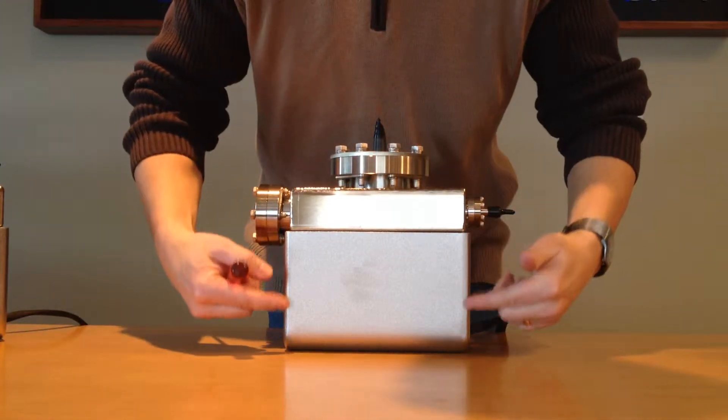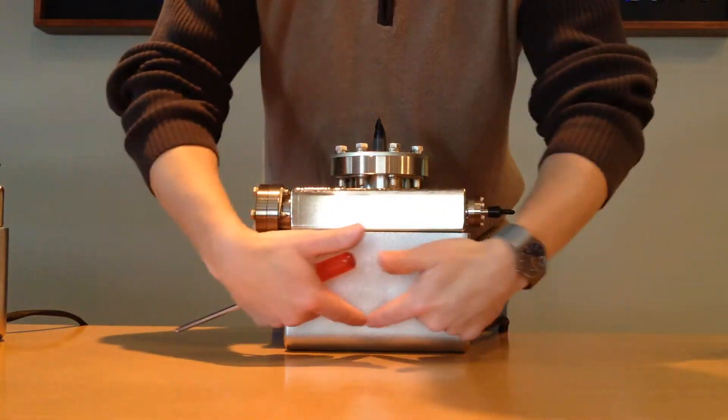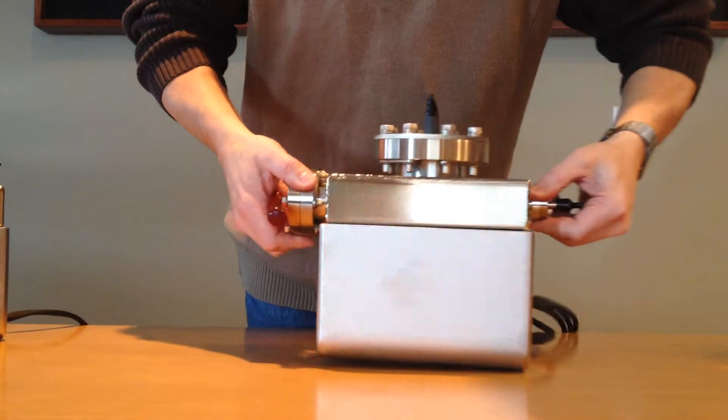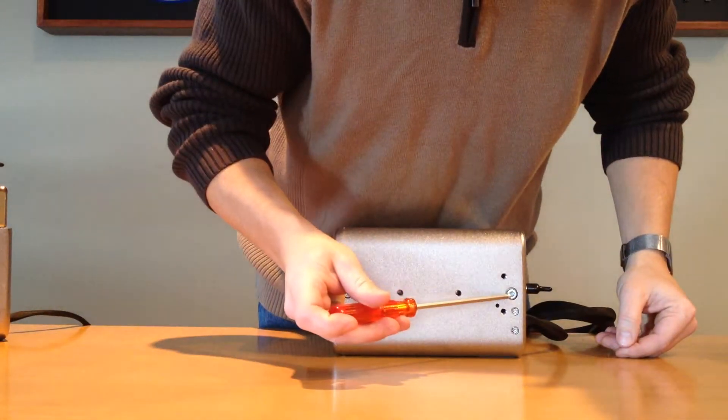So this is the pole piece and inside here there's a magnet right around the backside right there. In order to attach this we use two M6 bolts that are located here and here.